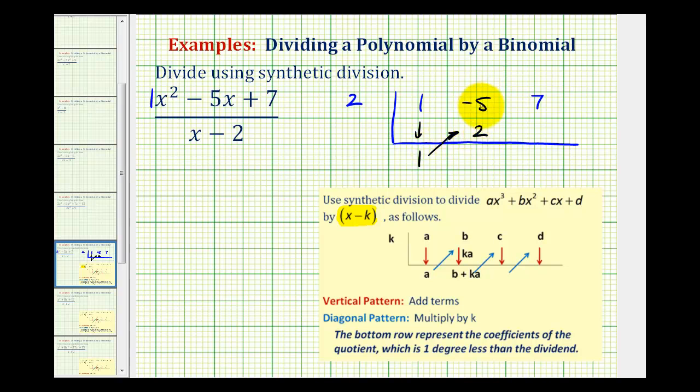We're going to add vertically, so negative five plus two is equal to negative three. Now multiply negative three and two. Negative three times two is negative six. Put that in the next column, and then add. So seven plus negative six is positive one.